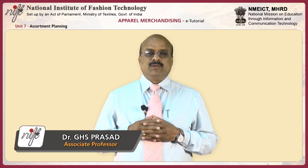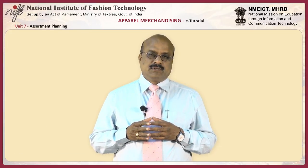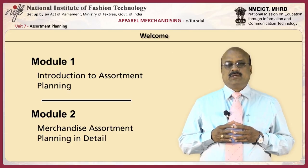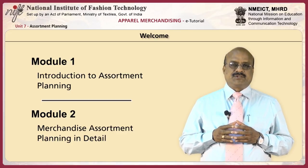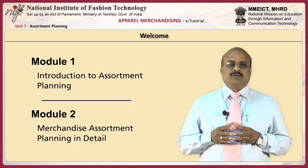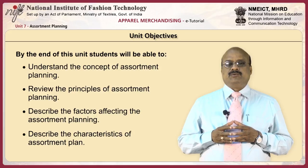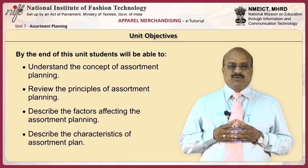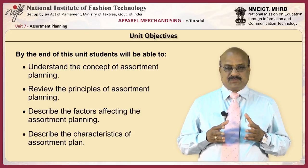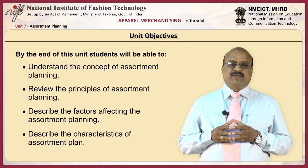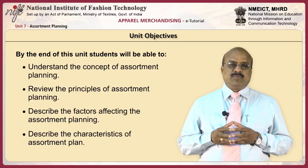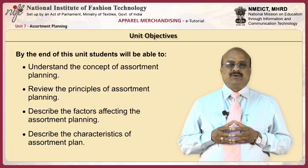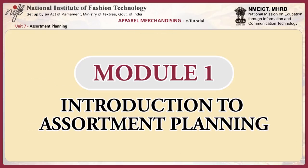Welcome to the unit. This unit reviews the assortment planning process and comprises two modules and a final review section that invites you to reflect on what you have learnt. By the end of this unit, students will be able to understand the concept of assortment planning, review its principles, describe the factors affecting it, and describe the characteristics of an assortment plan. The first module gives an overview of assortment planning.